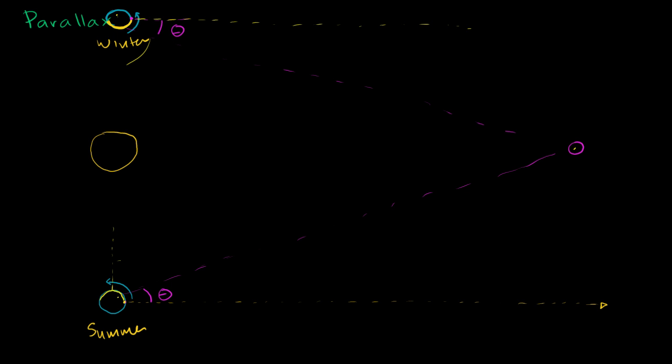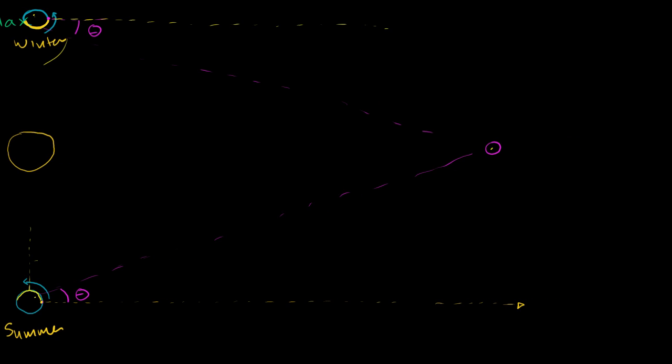So just to visualize this again, and I'll visualize it in a slightly different way. Let me scroll to the right a little bit. Let's say our night field of vision looks like this. And I'll do it in a dark color because it's at night. So our night field of vision looks like this.